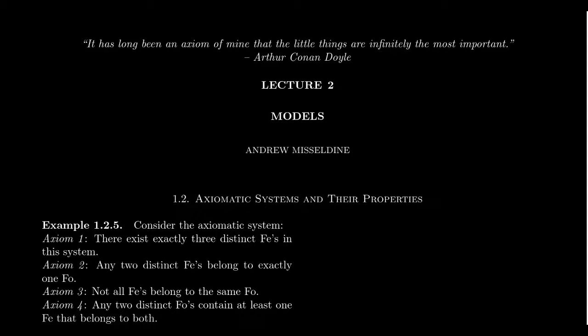The axioms provide a level of rigidity to the undefined terms. A reader can apply any interpretation to the undefined terms that they wish, so long as all of the axioms associated to these undefined terms are satisfied — that is, given the interpretation, the axioms are true. That would then be a valid interpretation. By giving each undefined term a particular meaning, we've created an interpretation of the system. If all the axioms are true statements with that interpretation, then we call that interpretation a model.